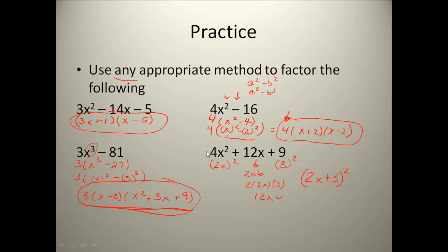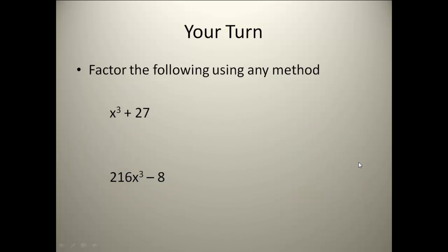The last one was three terms. I noticed I had 4x² in front and a 9 in the back, which made me wonder if it was a perfect square trinomial. I had to check the middle term — 2 times a times b. I rewrote 4x² as (2x)² and 9 as 3², then took 2 times 2x times 3, which turned out to be 12x — exactly what I needed. So it did follow the perfect square trinomial pattern, meaning it factors as (2x + 3)². Here are two final problems for you to try — factor them as far as you can using any method and bring them to class.